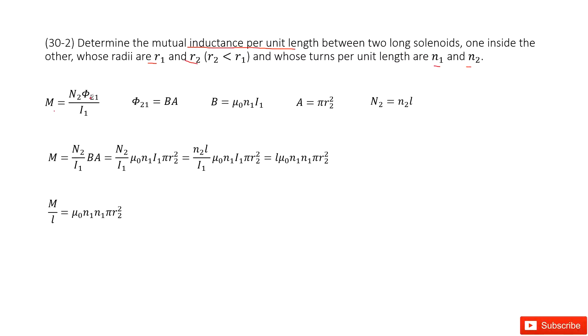The magnetic flux we can write as B times A. B times A, where B is from the first solenoid. The magnetic field is from the first solenoid: mu knot N1 I1.